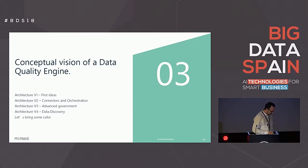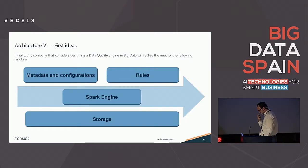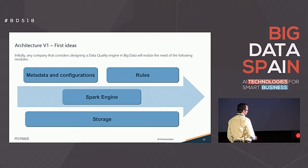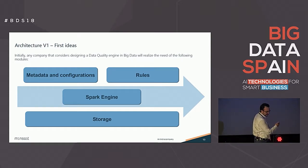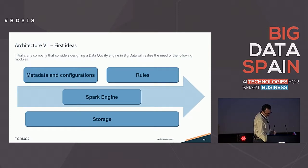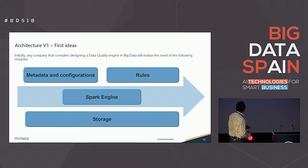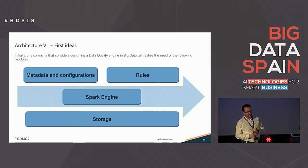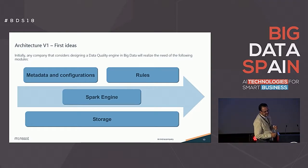Now I'm going to show you the real steps we followed when we created our data quality system. The first architecture is only a couple of ideas — if you use common sense, you will realize that if you want a data quality engine, you need a place to store the rules. If you are doing big data, you will use a Spark engine, and a place to store all the information. The key point is the metadata and configurations — a system that can be in or out of the data lake, storing all the configurations of files, the rules, which rule applies to which file and to which field within the file.